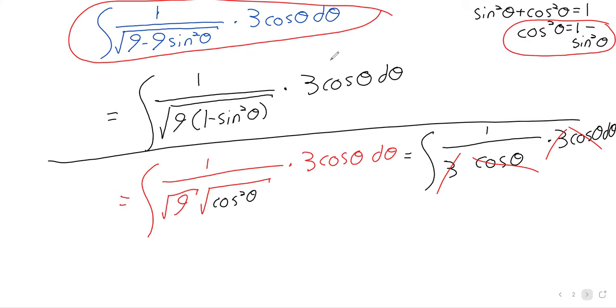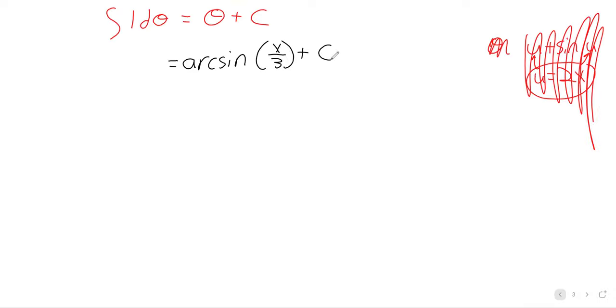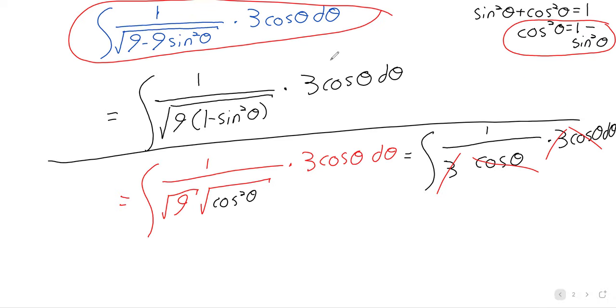Does anybody have any questions about the material or the problem we just did? Trig substitution — there are three classic trigonometric substitutions. They're messy, they can be difficult, but in partial compensation, they are very mechanical: if you see this, try this.